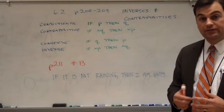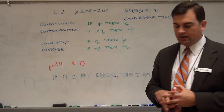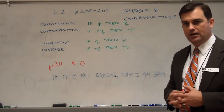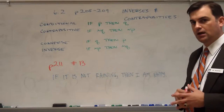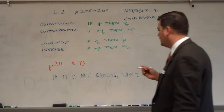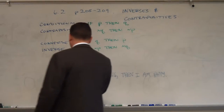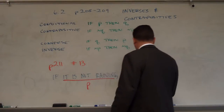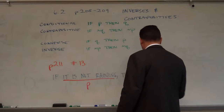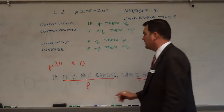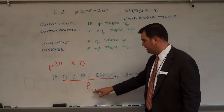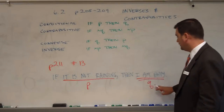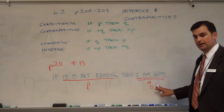My given conditional is: if it is not raining, then I am happy. The first thing I would do is make sure that I identify my hypothesis P and my conclusion Q. My hypothesis is: it is not raining. My conclusion is: I am happy.